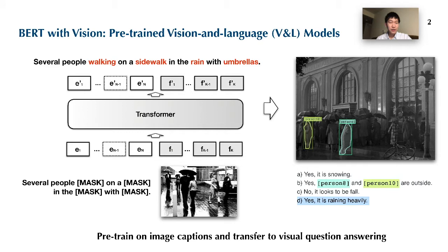Recently, a range of pre-trained vision and language models have established new results on various benchmarks. They are pre-trained on image captions using a mask-and-predict objective. Such pre-training has been shown to be beneficial for downstream tasks. For example, on the left side, during pre-training the model might encounter an image and is trained to predict that it is raining and people are walking with umbrellas. Then, when transferred to solve a downstream question, it knows to infer raining based on recognized umbrellas, without actually seeing the raindrops.